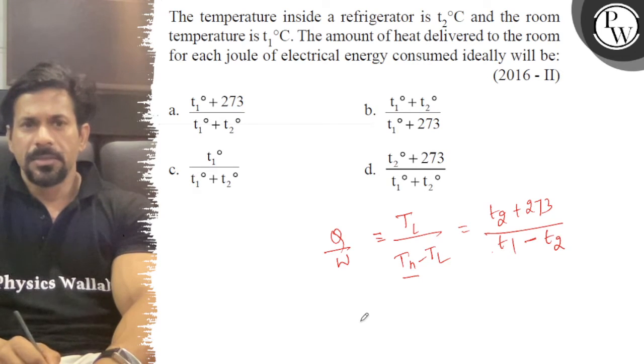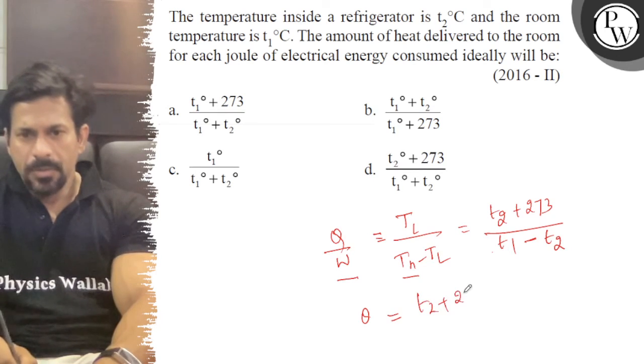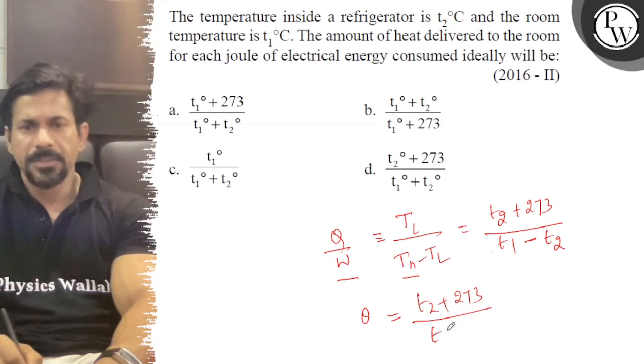So Q is equal to 1 joule. So T2 plus 273 upon T1 minus T2.